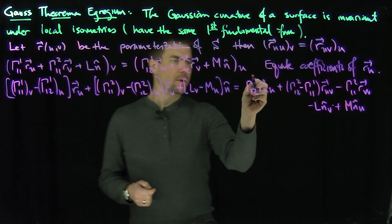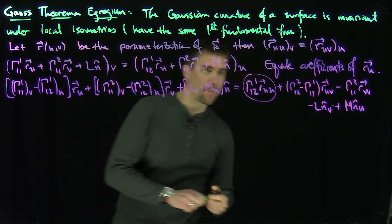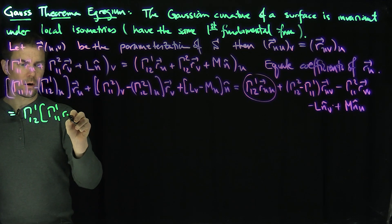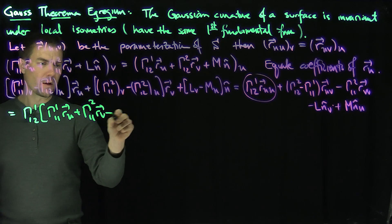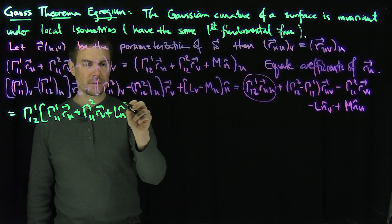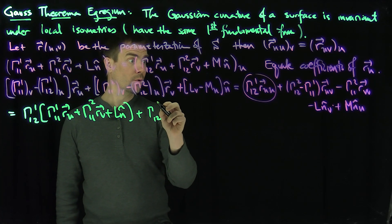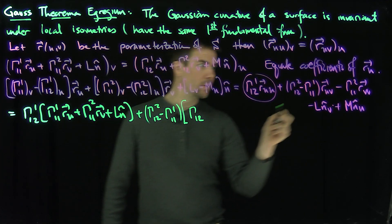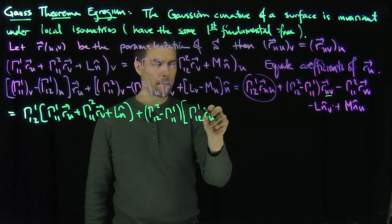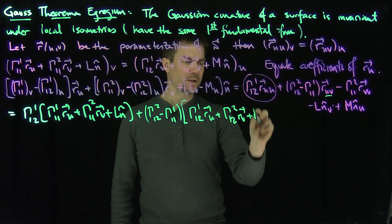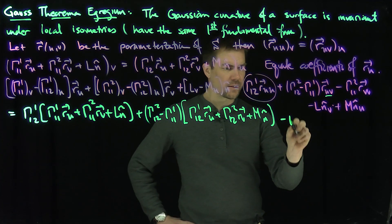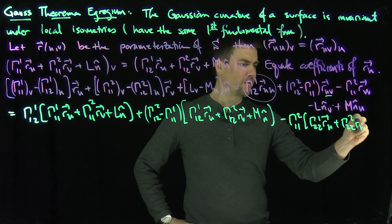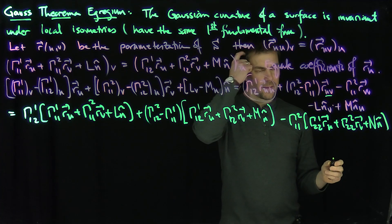Expanding the left-hand side: Γ¹₂₁ times (Γ¹₁₁ R_U + Γ¹₁₂ R_V + L N̂), plus (Γ¹₂₂ − Γ¹₁₁) times (Γ¹₂₁ R_U + Γ¹₂₂ R_V + N N̂), minus Γ¹₁₂ times (Γ²₂₁ R_U + Γ²₂₂ R_V + N N̂).